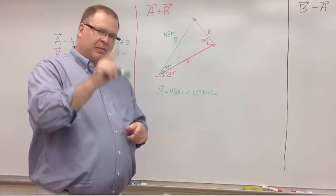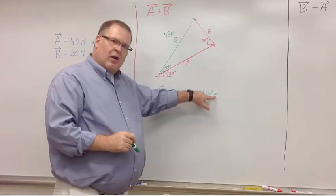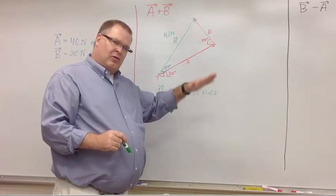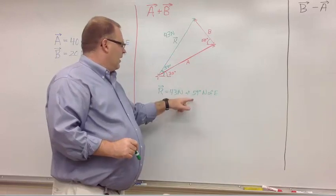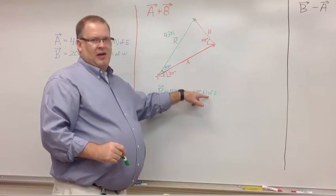Now, one thing that students sometimes make a mistake in is they put northeast. Northeast is a very specific direction. It is halfway between north and east, which is 45 degrees. It needs to be 59 degrees north of east.